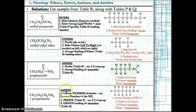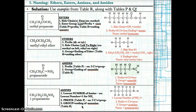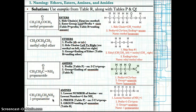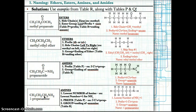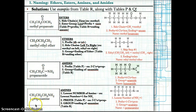For amines, you name them as follows: first, use the lowest number position of the amine; then use the prefix based on the number of carbons from table P; then add the group ending -anamine. For example, if we number the chain forwards and backwards, the NH2 is at position 1 since 1 is less than 4. We have three carbons, so the prefix is prop. The ending is -anamine since we have NH2. Together: 1-propanamine.